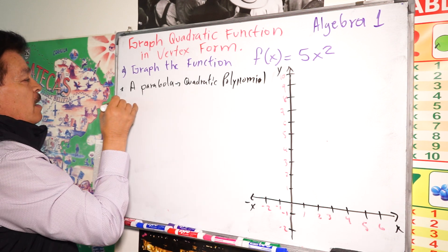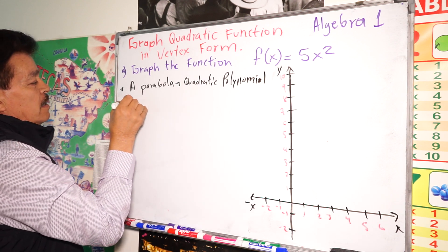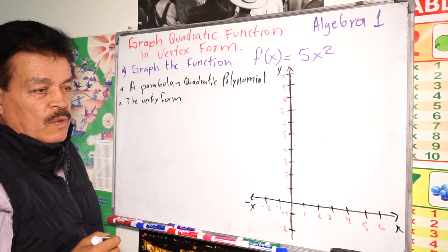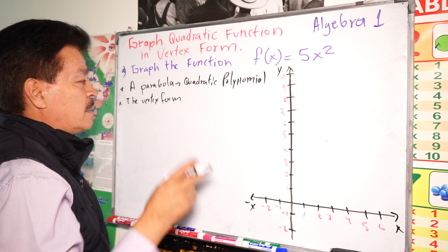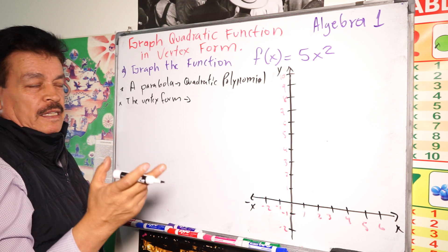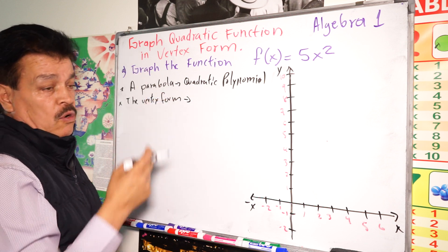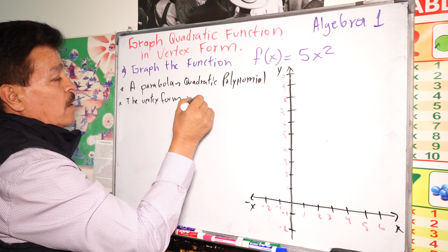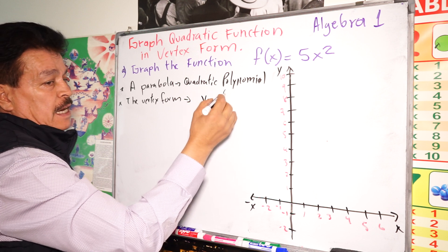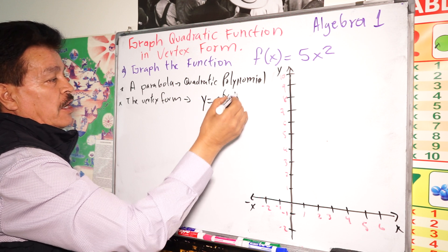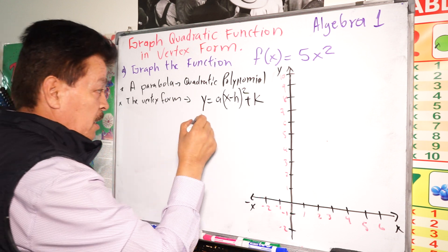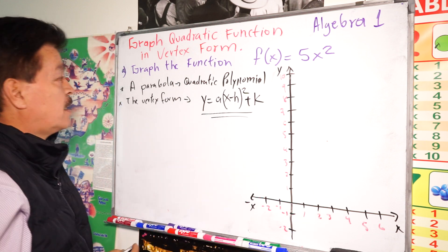Number two, the vertex form. The vertex form of a parabola, in this case when the parabola opens up or opens down, is y = a(x - h)² + k. This is very important, this formula is the vertex form.